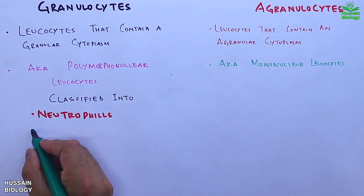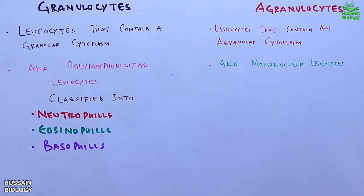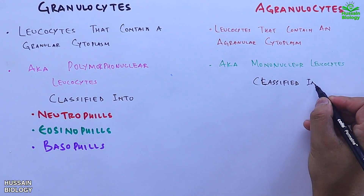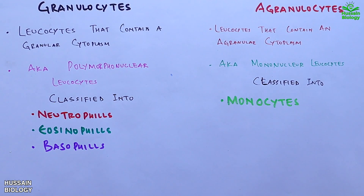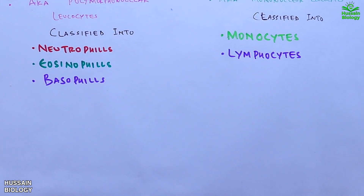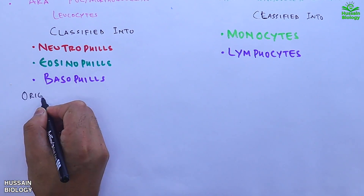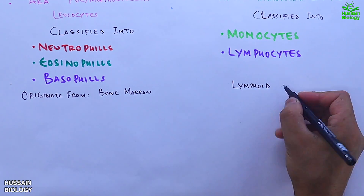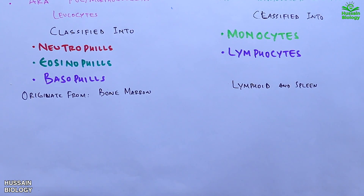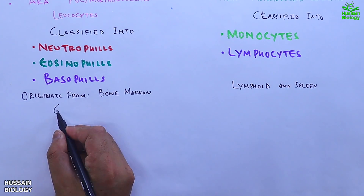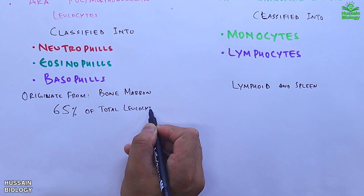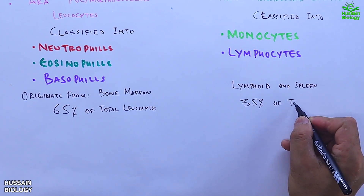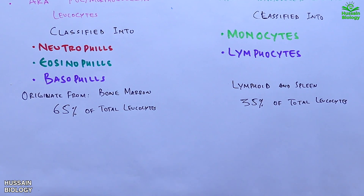Granulocytes are classified into neutrophils, eosinophils, and basophils, whereas agranulocytes are classified into monocytes and lymphocytes. Regarding origin and development, granulocytes originate from bone marrow, whereas agranulocytes originate from lymphoid tissue and spleen. Granulocytes comprise 65 percent of total leukocytes, whereas agranulocytes comprise 35 percent.